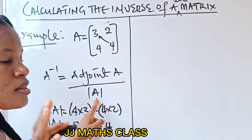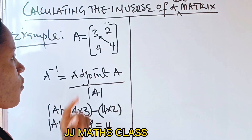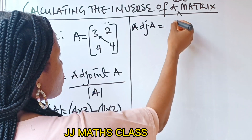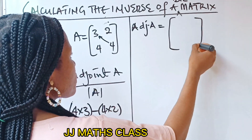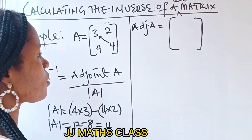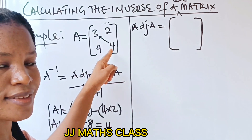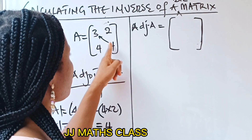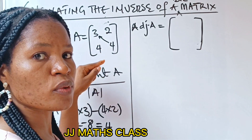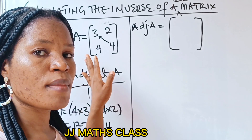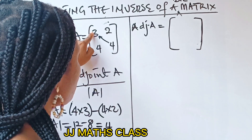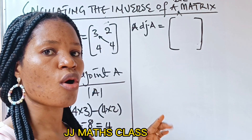Now, what we need is the adjoint of A. The adjoint of A is going to be a matrix. Your leading diagonal is very important. What you are going to do is exchange the positions of the elements of your leading diagonal. So 4 is going to take the position of 3, and 3 is going to take the position of 4.